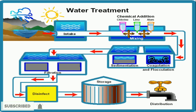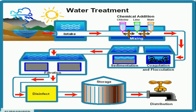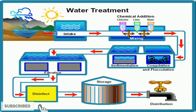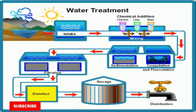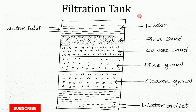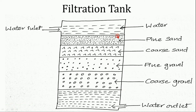After removing the coagulants and sediment from the water, we send it into the filtration tank. This is the process of removing bacteria, color, and taste by passing the water through filter beds containing fine sand and coarse sand.